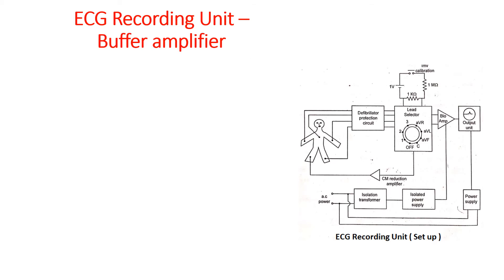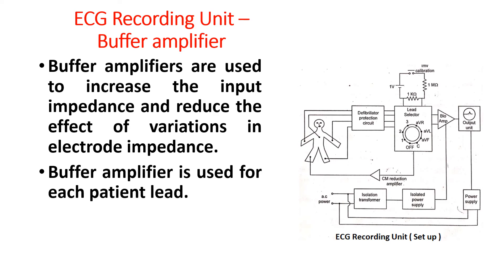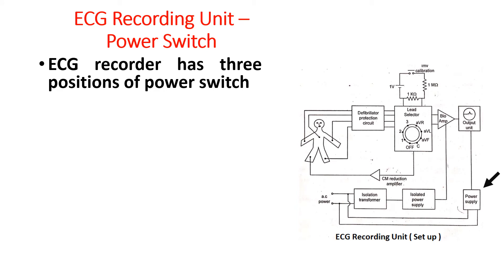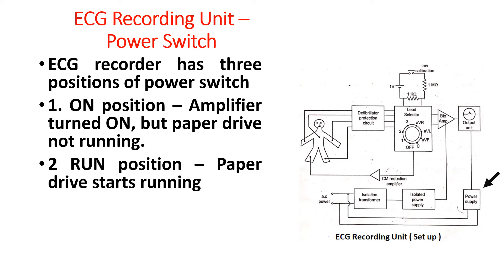Buffer amplifiers are used to increase the input impedance and reduce the effect of variations in electrode impedance. A buffer amplifier is used for each patient lead. The ECG recorder has three positions of the power switch. First is the on position — amplifier is turned on but the paper drive is not running. Second is the run position — paper drive starts running. The third position is the off position — ECG unit is switched off.